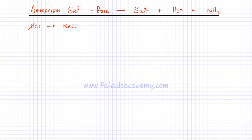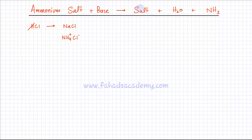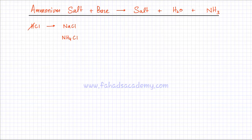Now, if you neutralize an acid, you get a salt. You can replace it with any other positive ion. So if you replace that H+1 with an ammonium ion, then you get an ammonium salt. Since NH4 is +1 and Cl is -1, the charges cancel out, and the overall charge on this ammonium salt would be 0.